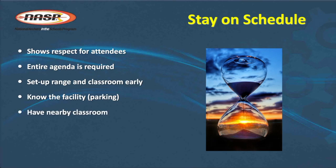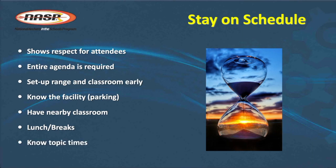A nearby classroom is important because you'll start and end every class in a classroom. You can have tables and chairs in the gymnasium with the range — gymnasiums are large enough for that. You could also have a room adjacent to the gym. Lunch and breaks need to be covered in the agenda, and if you know the topic times, you're better able to stay on time — knowing you have 10 minutes for eye dominance, 20 minutes for the string bow, 30 minutes for 11 Steps, 30 minutes for the bow station, and 20 minutes for the arrow station.